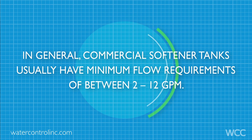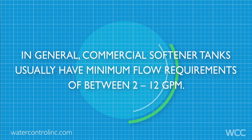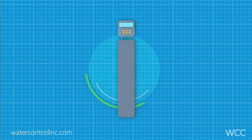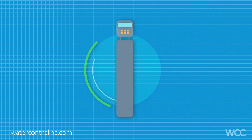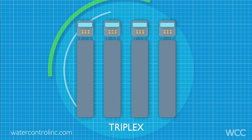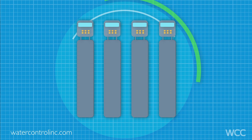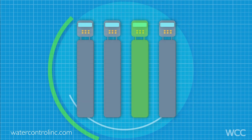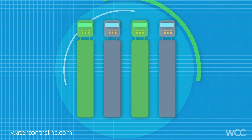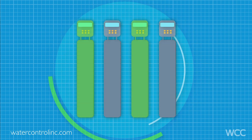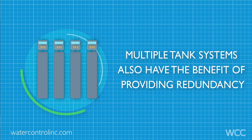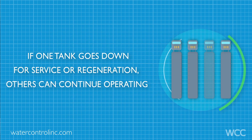Dropping below these flow rates for prolonged periods can lead to poor performance due to media channeling. To avoid this, if the minimum flows on a single tank look too high, consider a twin, triplex, or even a quad system. The softener controls will bring individual tanks online and offline dependent on system flow, and thereby avoid the channeling issue. Multiple tank systems also have the benefit of providing redundancy — if one tank goes down for service or regeneration, others can continue operating.